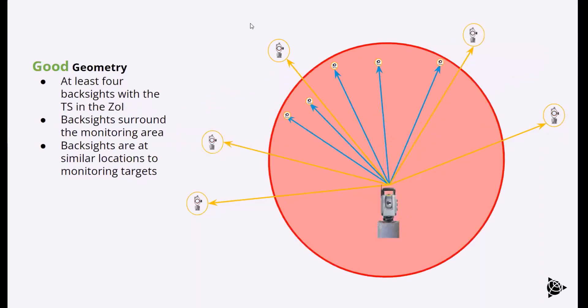Another example here of good geometry: instead of Station Setup Plus, we have the resection. The total station is in the zone of influence and we have our backsides surrounding the monitoring zone. Here we want to introduce additional backsides because the total station is no longer at a known position. Every time we're running the round, we're recalculating that total station coordinate. We want to make sure we have at least four backsides, five if you can, six is always great. Really introducing more backsides, we have more known points and you can do the math a little bit easier.